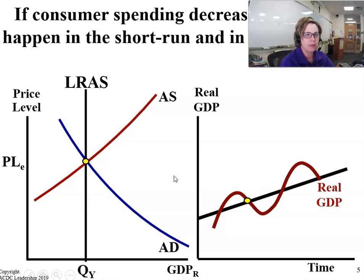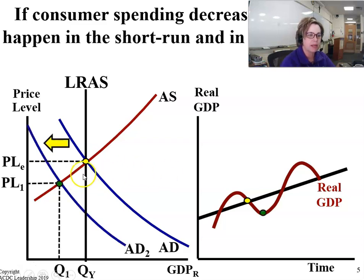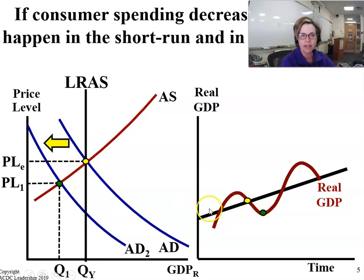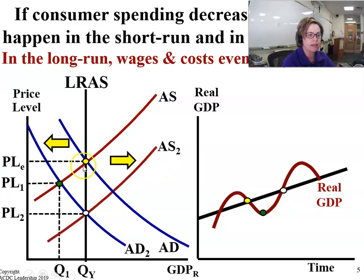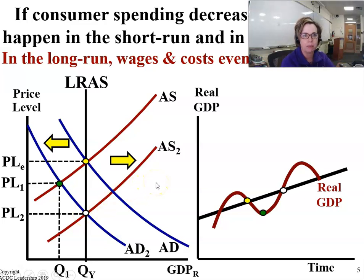If consumer spending decreases, what's going to happen in the short-run and in the long-run? If consumer spending decreases, then aggregate demand moves to the left — from yellow to green on this graph and on the business cycle graph as well. However, in the long-run, wages and costs will eventually go down. So aggregate supply will shift to the right and we will return to the same point where we originally started, or the same output level.